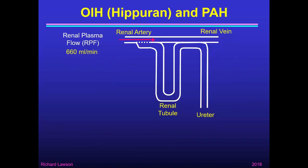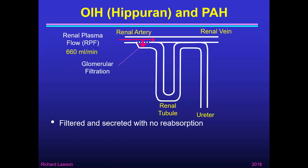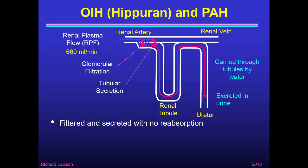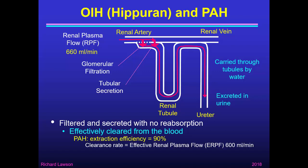Other molecules — OIH (ortho-iodohipuric acid), also called Hipuran, and PAH (para-aminohipuric acid) — also enter the kidney at a rate equal to the renal plasma flow. They're filtered but also actively secreted, with no reabsorption. So they undergo glomerular filtration and tubular secretion, then are carried through the tubules by water and excreted in the urine. This means they're quite effectively cleared from the blood because tubular secretion is a very efficient process for these molecules. In fact, PAH has an extraction efficiency of 90% — 90% of what comes in through the renal artery comes out in the urine, and only 10% exits through the renal vein.